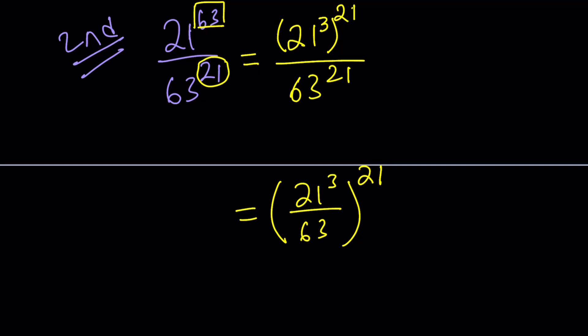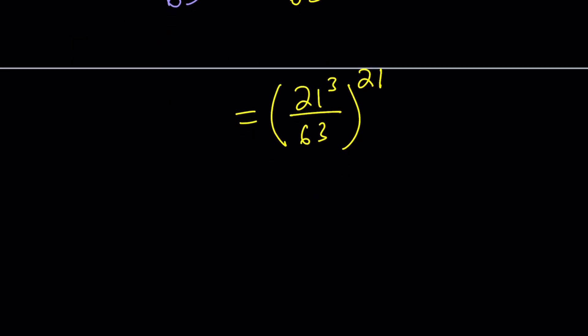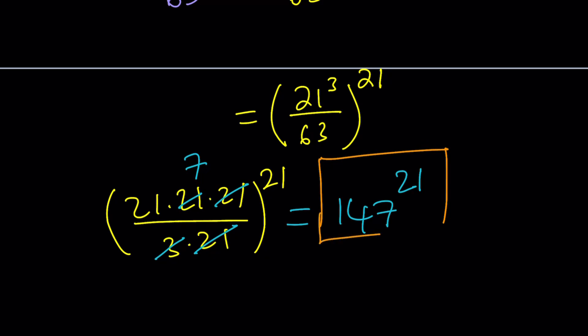And at this point, you can simplify the inside. How? 21 cubed is 21 times 21 times 21. So let's write it that way. And then 63 is 3 times 21. And then the whole thing is raised to the power of 21. A lot of 21s, right, in this problem. And then 21 cancels out. 3 goes into 21 seven times. And 21 times 7 is 147 to the power of 21. And this brings us almost to the end of the video because I still have to show you the numerical value.